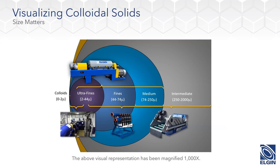To put this in perspective, this image has been multiplied times 1,000 to give you an indication of scale. That little yellow dot representing a colloidal solid at about two micrometers in size — compared to the medium size, which would be up to about 250 microns — shows how small a colloidal solid is compared to fines, mediums, and intermediate solids. We broke it down there to give you some scale.